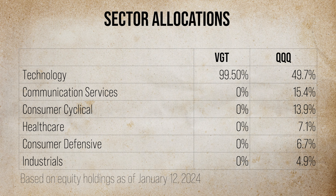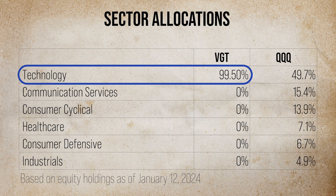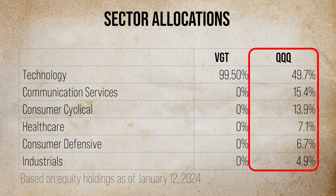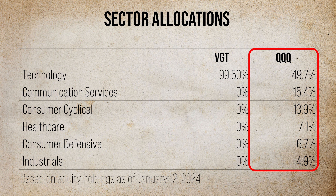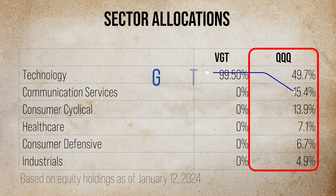Let's take a quick look at sector allocations. Due to tracking the technology sector only, VGT's holdings are IT companies. This is not so for QQQ. For instance, QQQ has a decent allocation to the consumer cyclical sector. Likewise, Google and Meta get the lion's share of the communication services sector allocation. Wall Street uses the Global Industry Classification Standard, which groups companies into 11 sectors and is very particular about what classifies as a technology company. Arguably, there's no other company like Google or Meta that leverages technology more, and yet here we are.